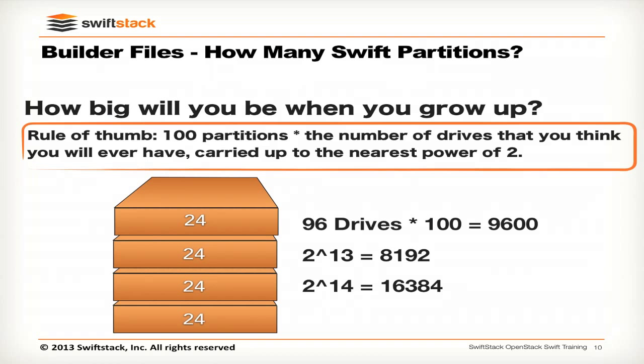To go through the math explicitly: assume hypothetically your cluster is only going to have four JBODs, each with 24 spindles, for a total of 96 drives. We want 100 partitions per drive at scale, so we multiply 96 times 100 to get 9600. We look for the next largest power of 2 that is at least 9600. In this workshop example we're using 14, because 2 to the 14th is just the right size. A good setting we generally recommend is 18, which will carry a cluster to a decent size.